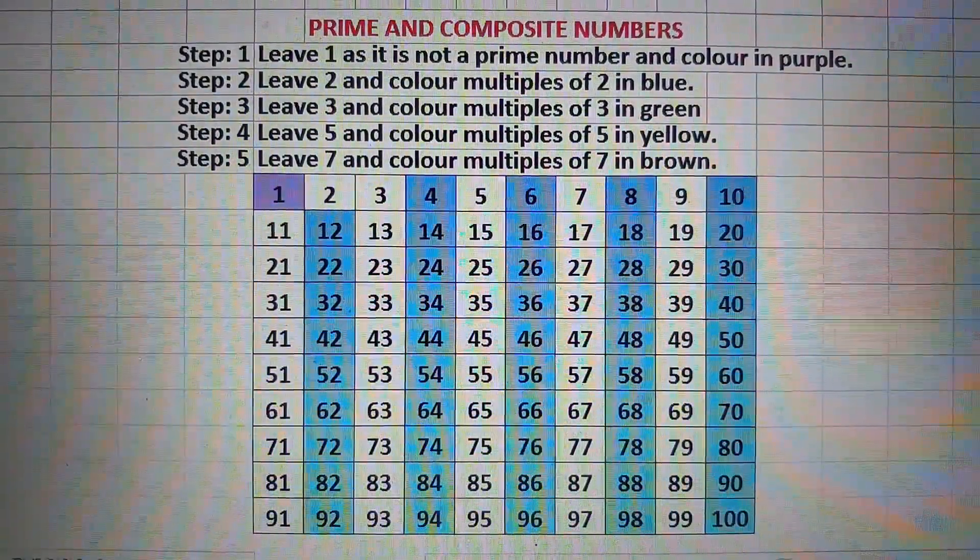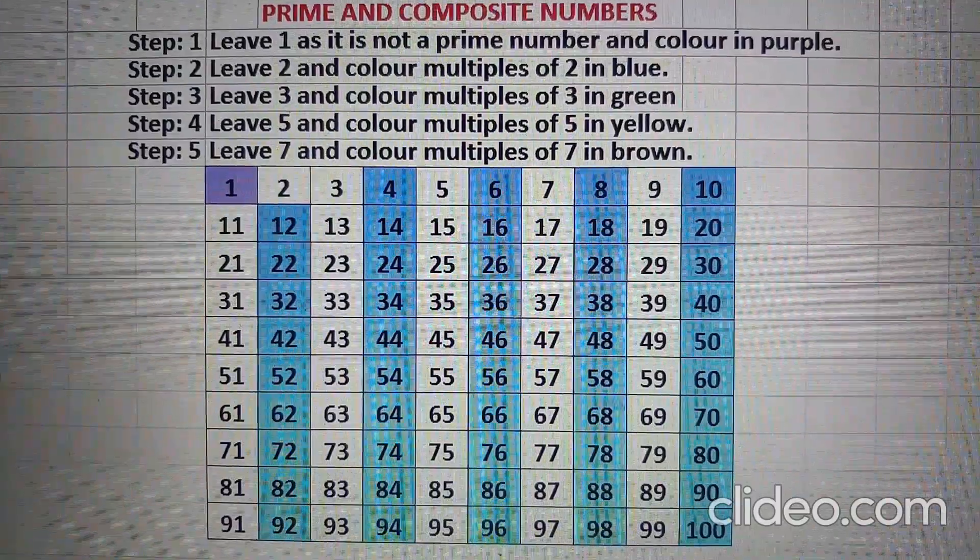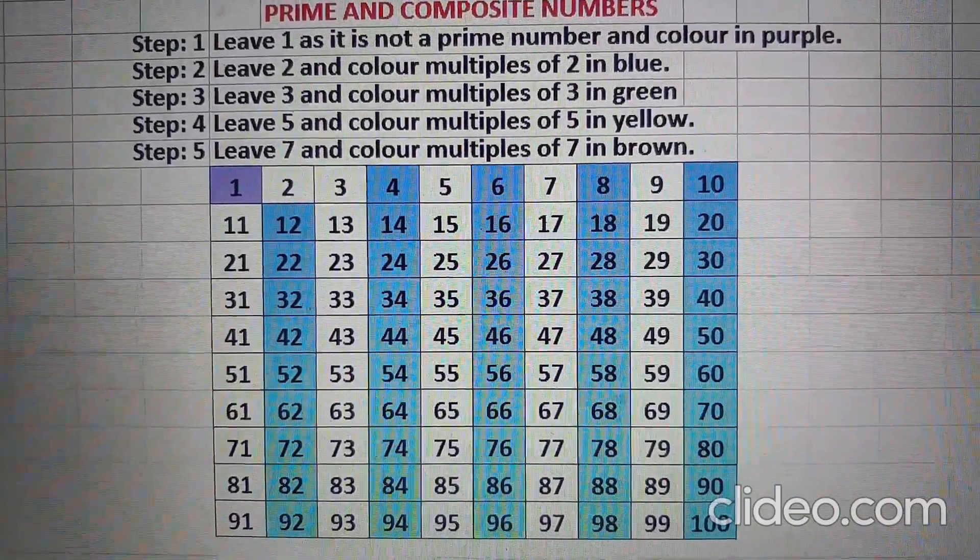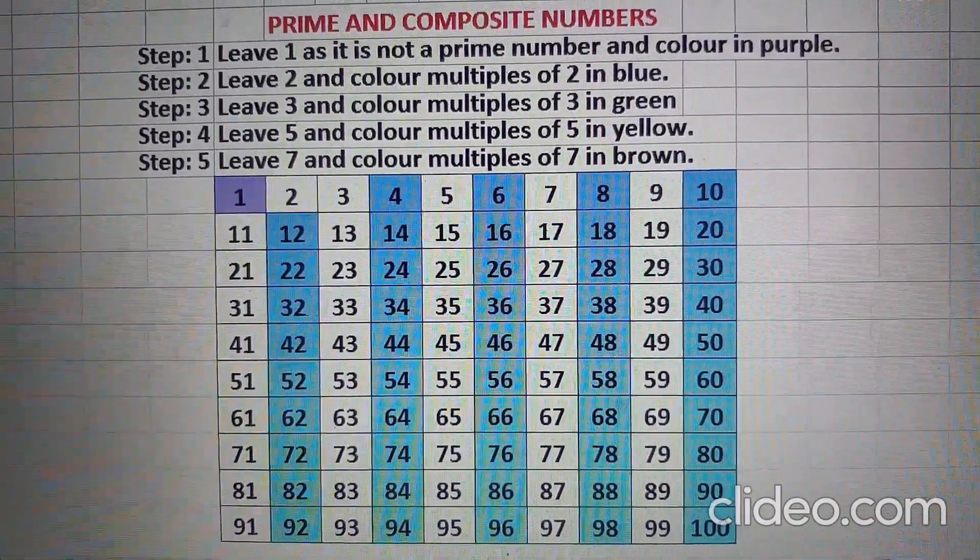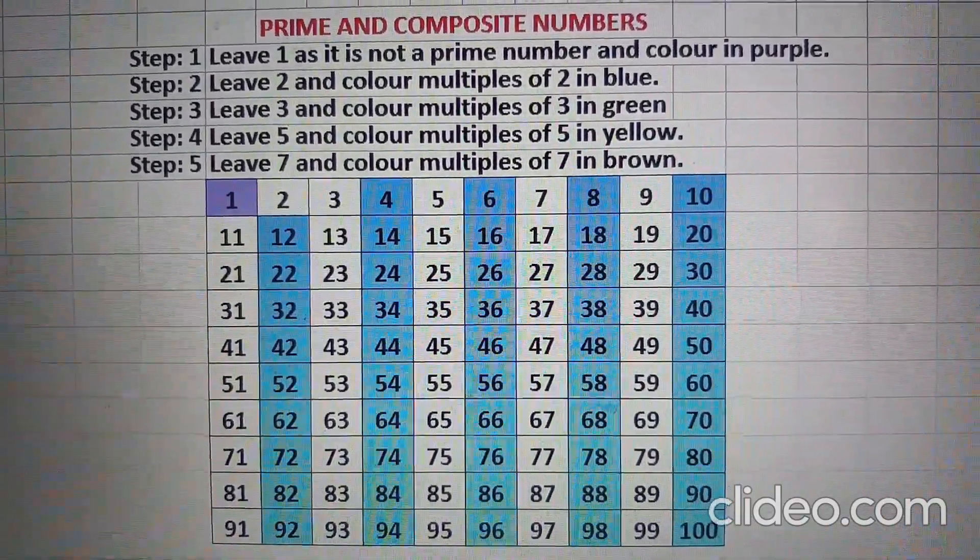Step 3: leave 3 and color multiples of 3 in green. Multiples of 3 are 6, 9, 12, 15, 18, 21, 24, 27, 30, etc.